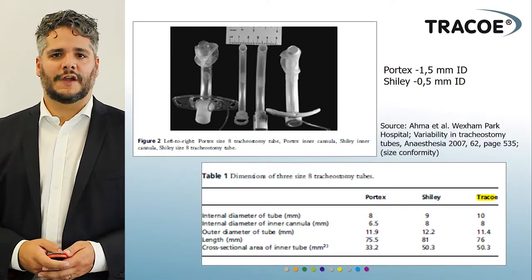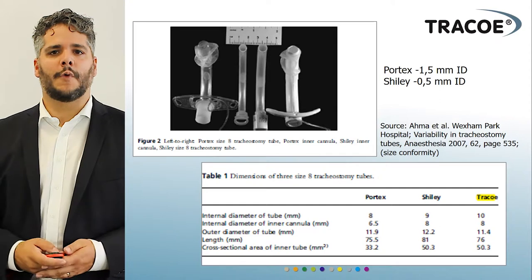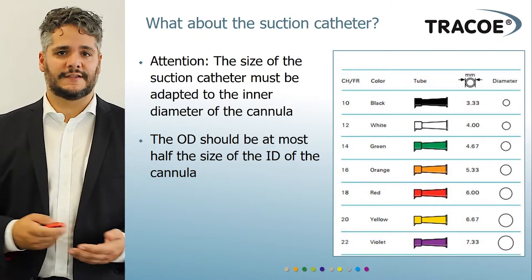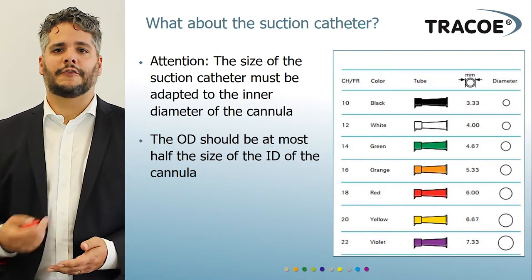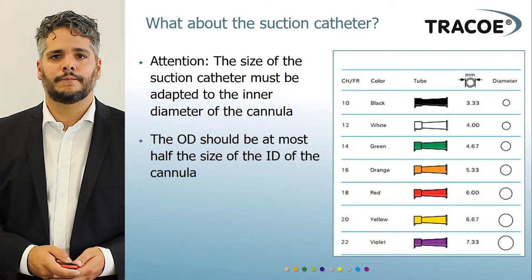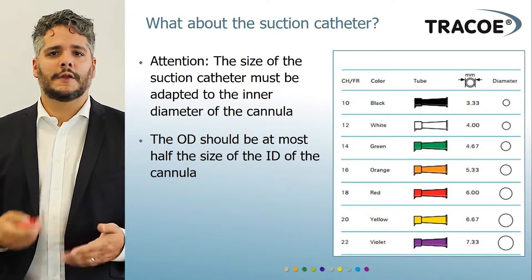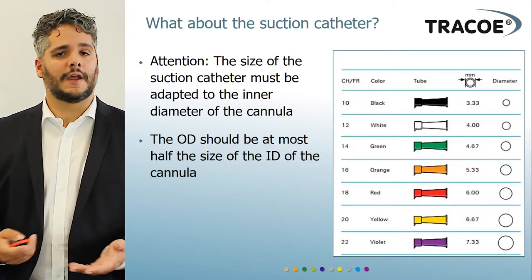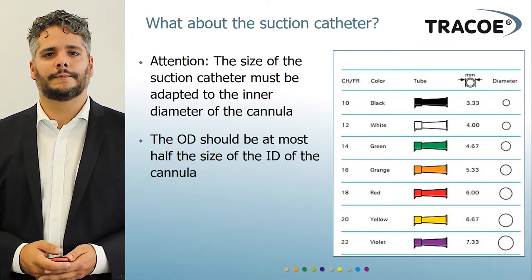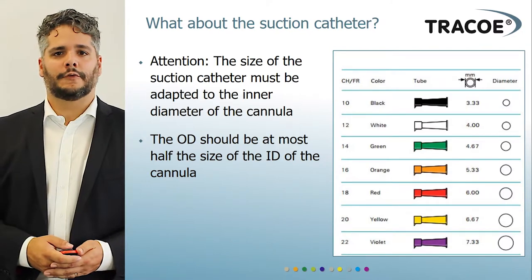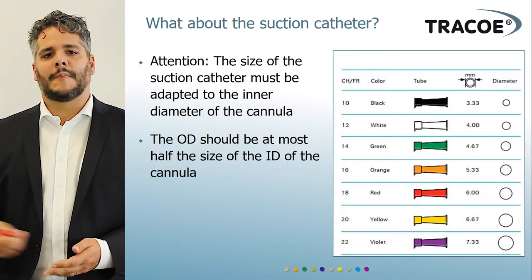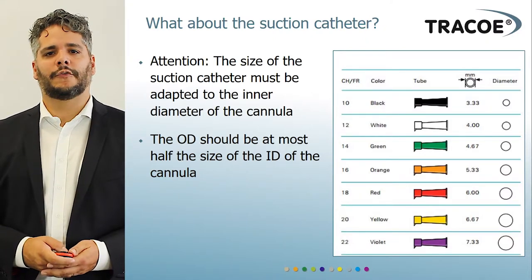The inner diameter of the tracheostomy tube is not only important for air flow, but also for the choice of your suction catheter. Recommendations state that the outer diameter of the suction catheter should not exceed 50% of the inner diameter of the inner cannula. This means the bigger your inner diameter is, the bigger your suction catheter can be, which will increase the efficiency of suctioning. This concludes the first part; my colleague Kai Hiller will now take over to discuss the outer diameter.